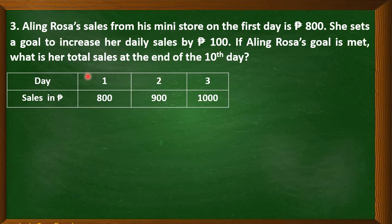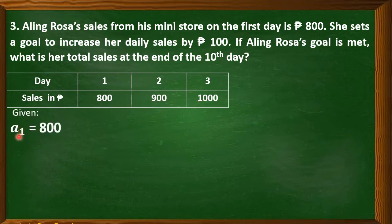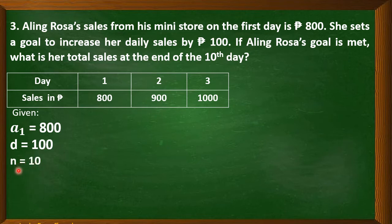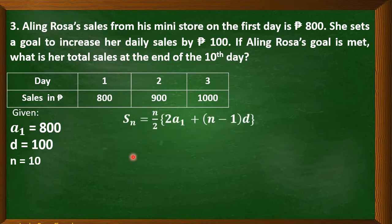Let us try to represent first. For day 1, the sales is 800. For day 2, since her goal is to increase it by 100, it will become 900. And on day 3, it will become 1,000. We were able to form an arithmetic sequence. The first term is 800, the common difference is 100, and N is equal to 10 since we are asked for the total sales at the end of the 10th day. We are going to make use of the arithmetic series formula.